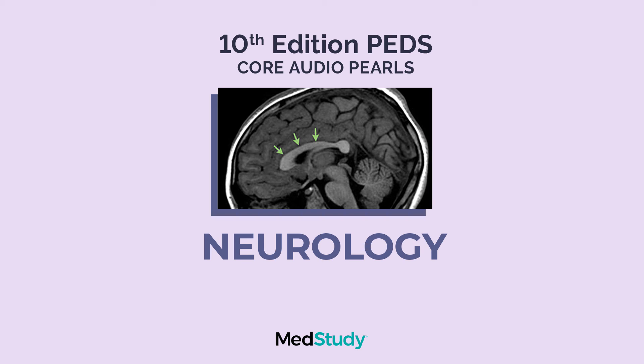Dyskinetic CP is from damage to the basal ganglia, and ataxic CP is from damage to the cerebellum, and they present with different symptoms, with dyskinetic CP having choreoathetosis and ataxic CP having ataxia.